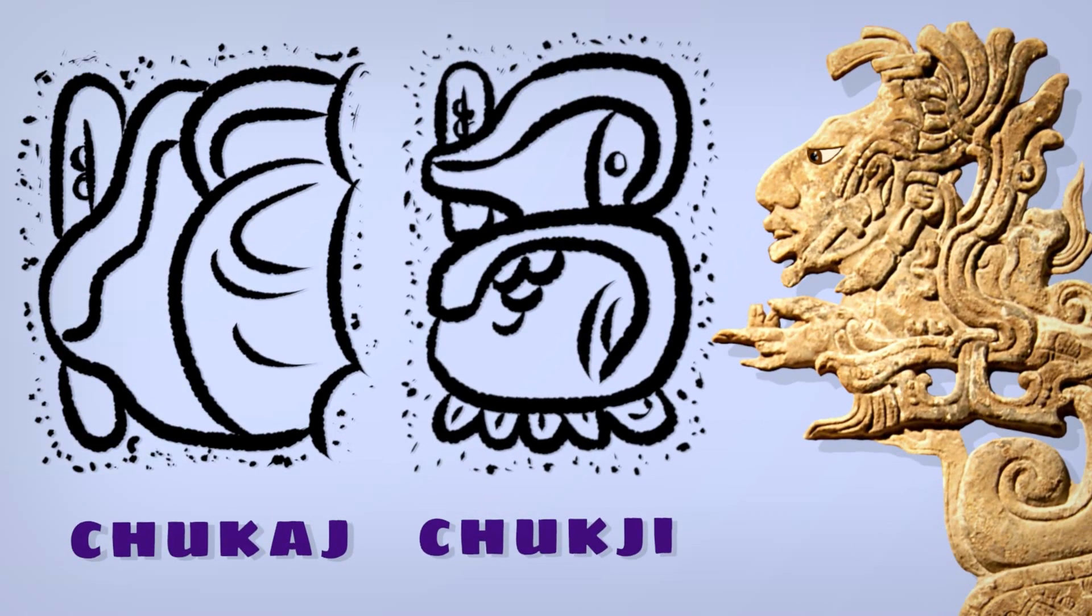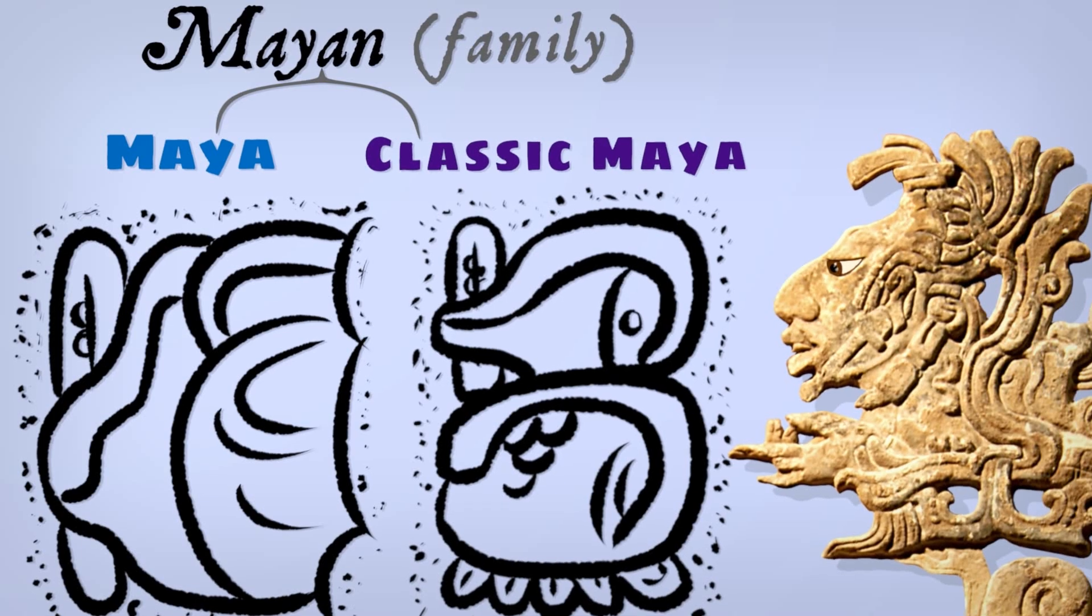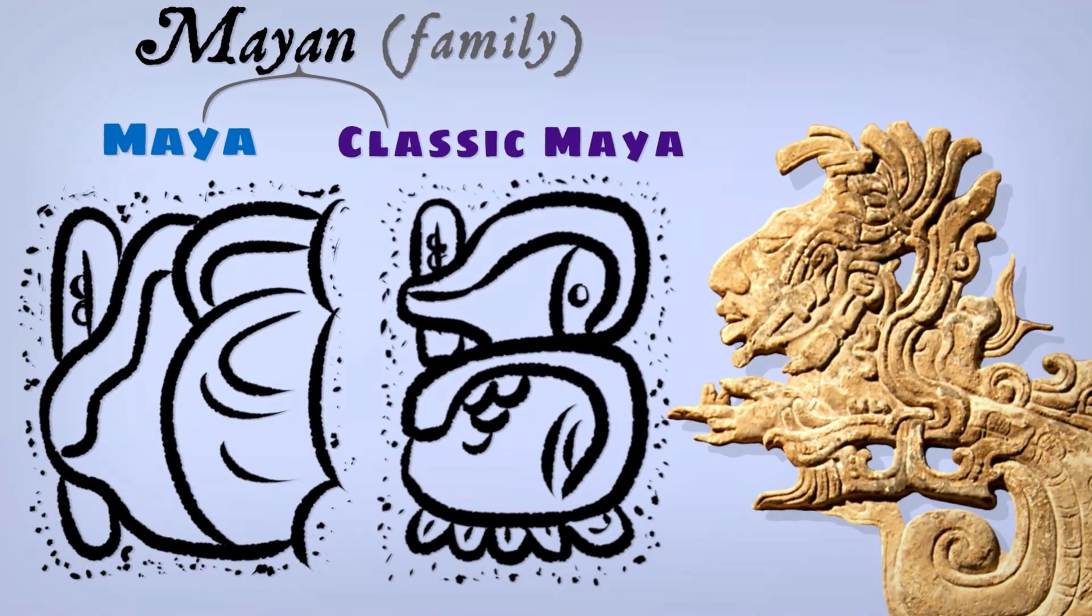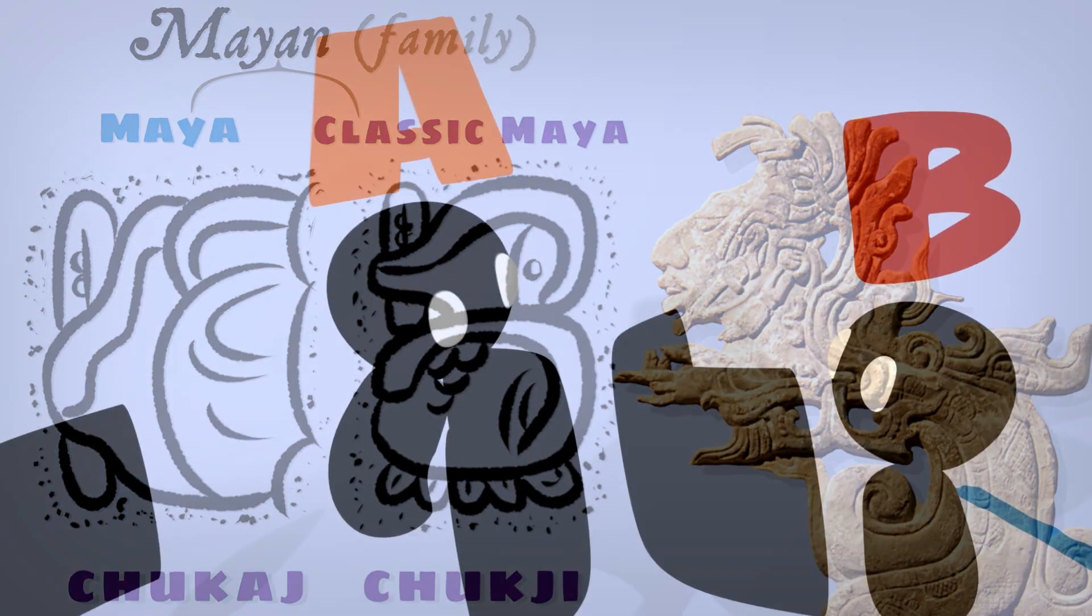These glyphs record history in classic Maya, an ancient relative of Yucatec. But despite my translation and just like in that study, they do it without tenses.